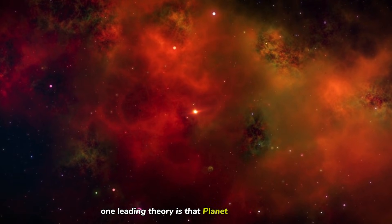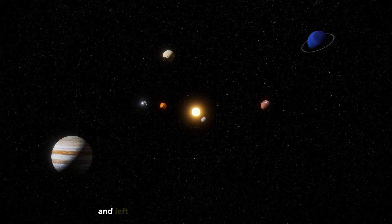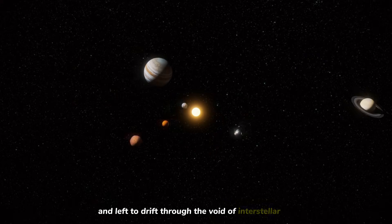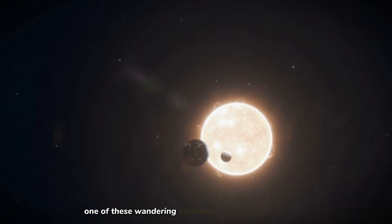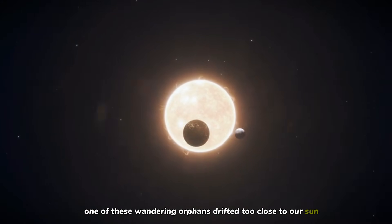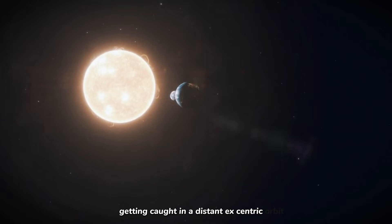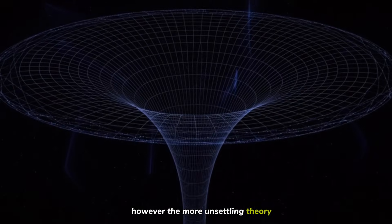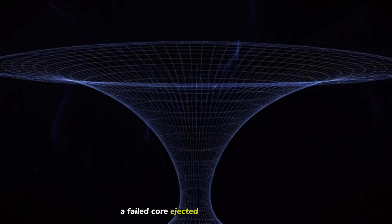One leading theory is that Planet Nine is a rogue planet. The galaxy is full of them. Planets that were ripped away from their parent stars and left to drift through the void of interstellar space. It is possible that billions of years ago, one of these wandering orphans drifted too close to our sun and was snagged by our gravity, getting caught in a distant eccentric orbit. However, the more unsettling theory is that Planet Nine is one of our own siblings, a failed core ejected from the inner family.